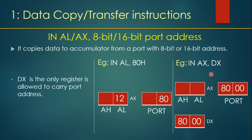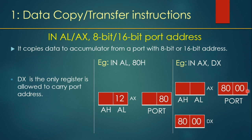For a 16-bit port address, as in the example IN AX, DX: DX is the default location for a 16-bit port address because you cannot specify a 16-bit address directly in the instruction. You must first load the port address into DX in a prior step, then execute IN AX, DX. In this example, DX holds 8000H, so the data from port address 8000H — which is 1234H — is transferred to the AX register.